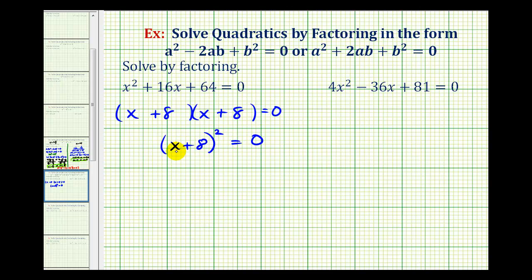Now the only way the quantity (x + 8)² is going to be equal to zero is when the factor of x + 8 equals zero. So if we subtract 8 on both sides of the equation, we'll have our solution which is x = -8.